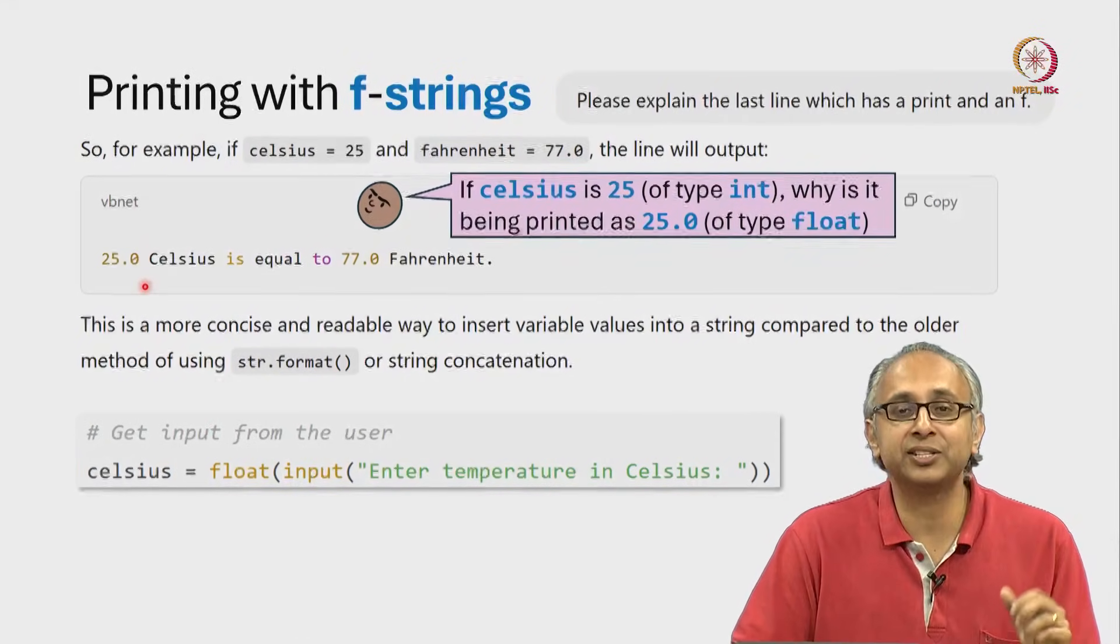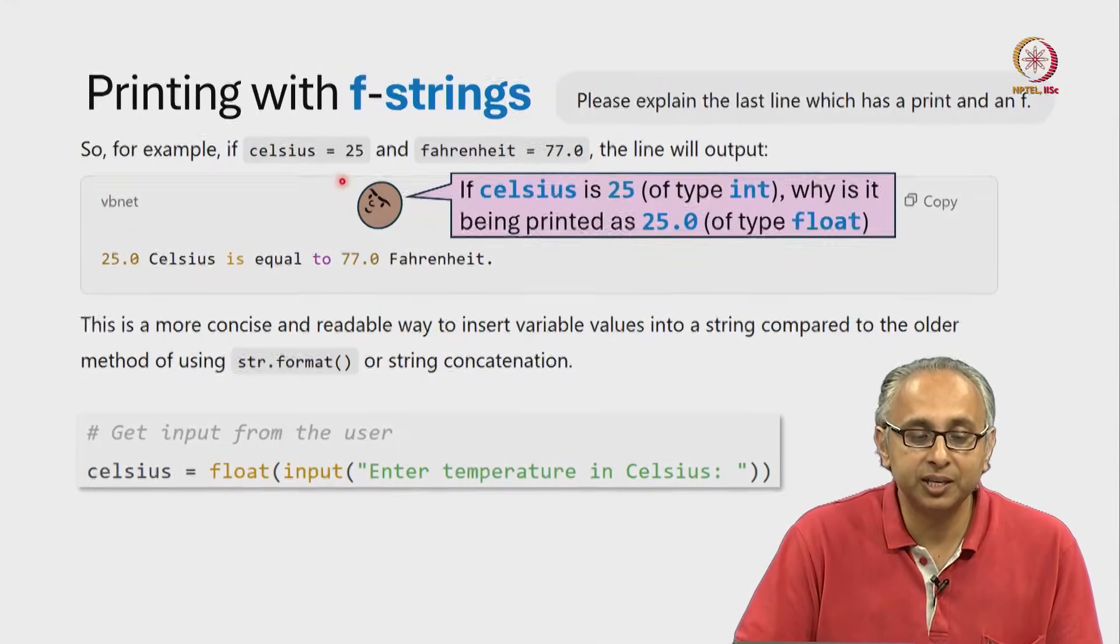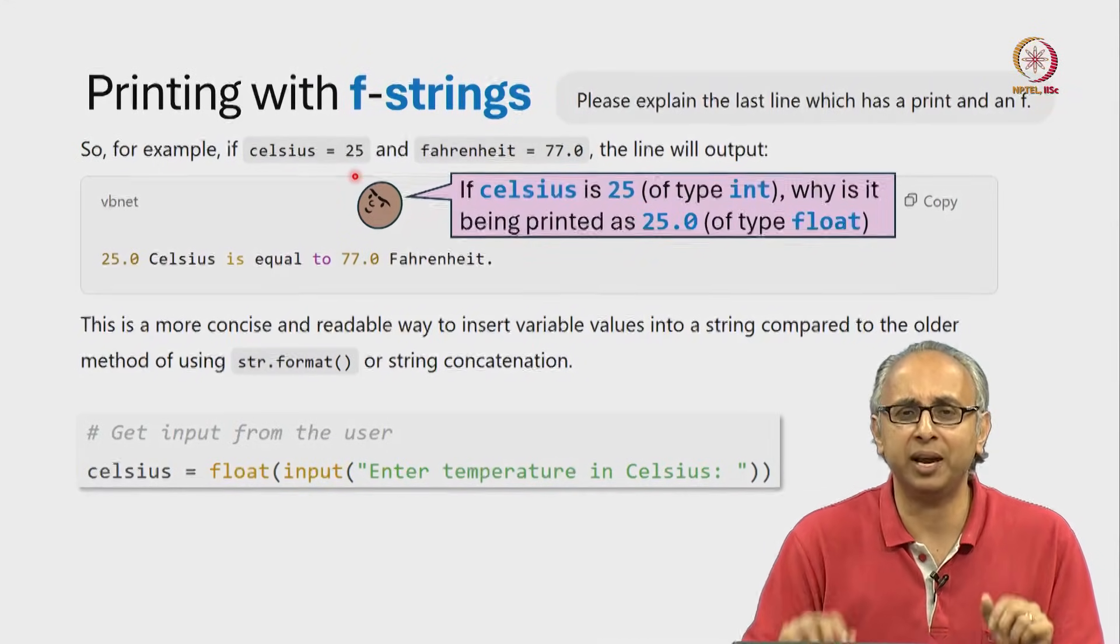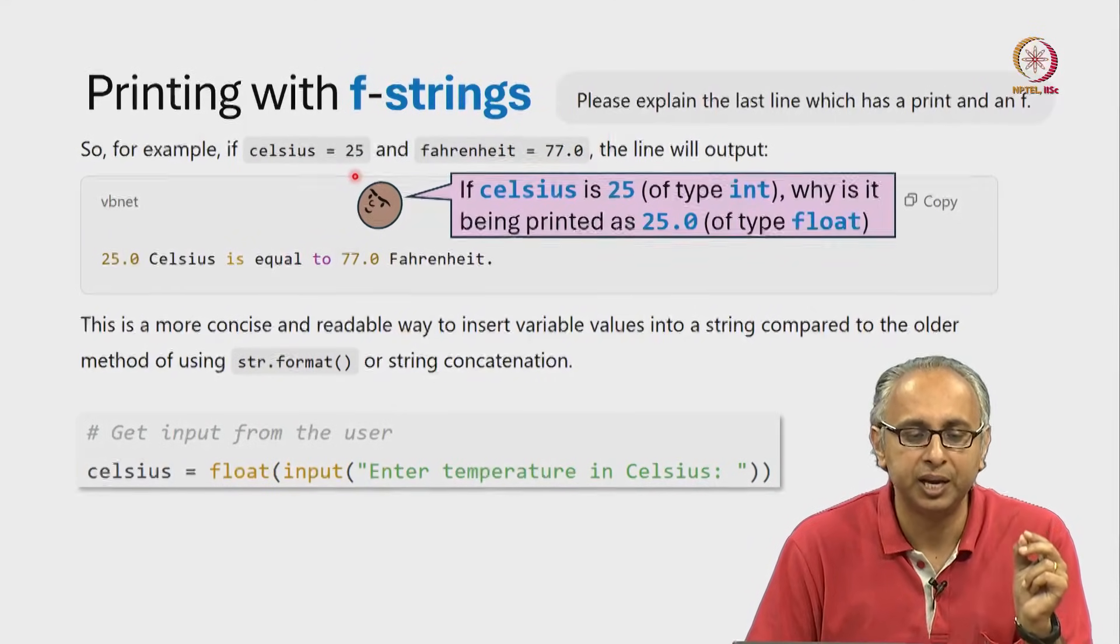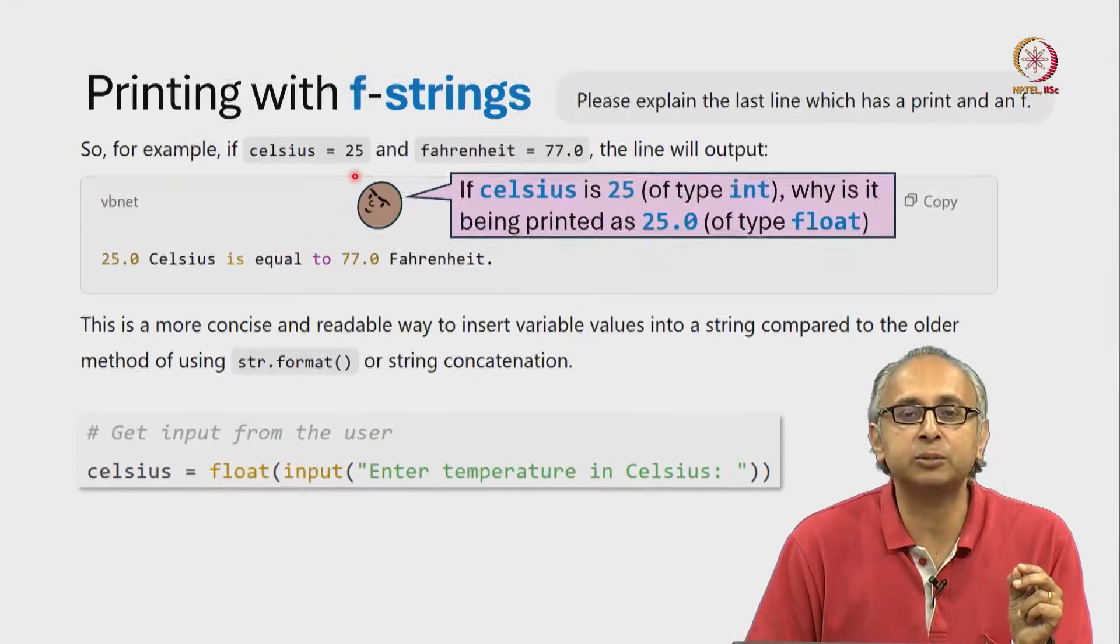It's a small error but it's a very important little mistake that our friend has caught. The AI generated explanation should have said, if Celsius is 25.0, then it will print 25.0.